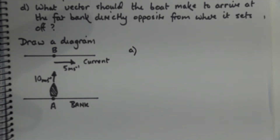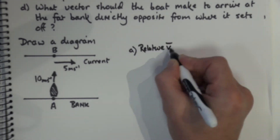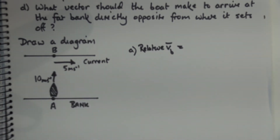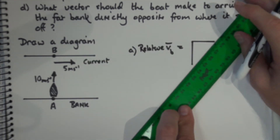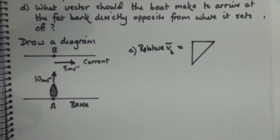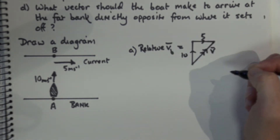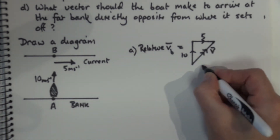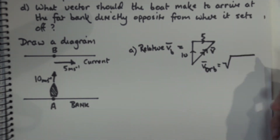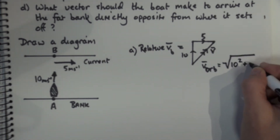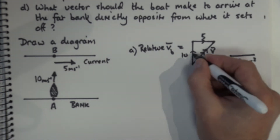For part A I need to determine the velocity relative to the bank, which I'll call VB. Because we're going in two dimensions I'm going to make a triangle made up of the boat's velocity at 10 metres per second and the current at 5 metres per second, and the double-arrow line is my velocity as seen from the bank. So the boat's velocity relative to the bank is the square root of 10 squared plus 5 squared, which is the square root of 125, equalling 11.2 metres per second.